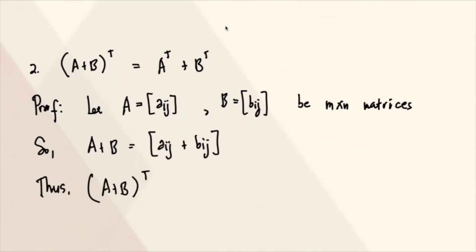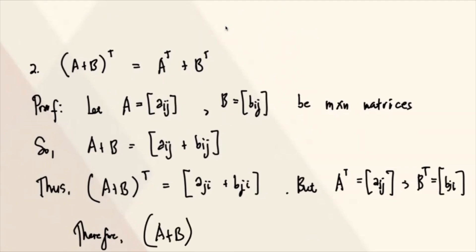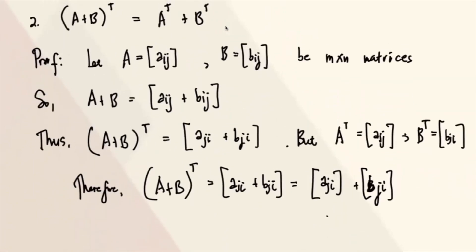So if you take the transpose of this, that is A plus B transpose, this is the same as Aji plus Bji. But the A transpose is actually Aji. Ang B transpose naman is Bji. So this implies the fact that if you have A plus B transpose, that's the same as Aji plus Bji. So kung paghihiwalayin mo yan as property of the sum, this is Aji plus Bji. And di ba ito yung A transpose plus B transpose? So therefore, we have proven this property.